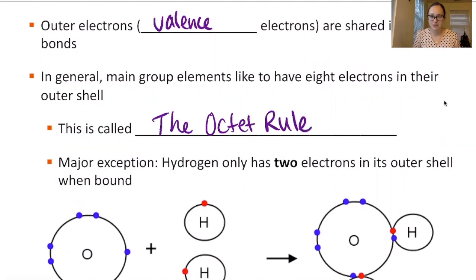There is a big exception to this. Specifically, hydrogen only has two electrons in its outer shell when bound. Additionally, helium already has two electrons typically, so normally helium is not going to bond with anything. The most important exception we're going to deal with is hydrogen.